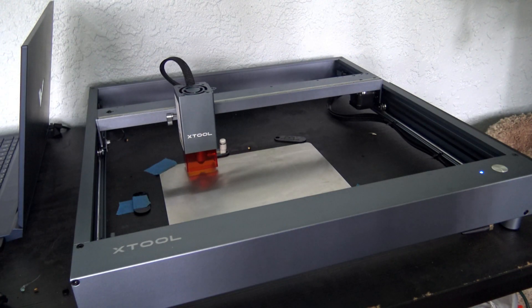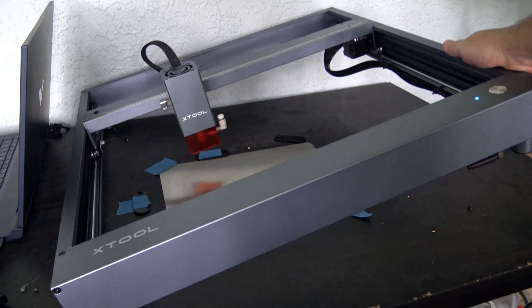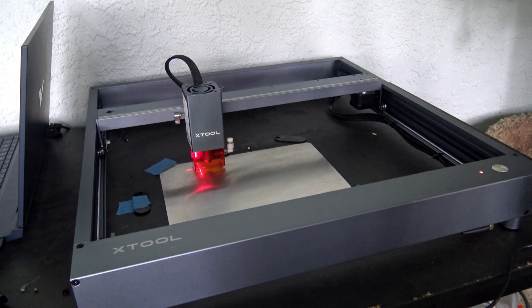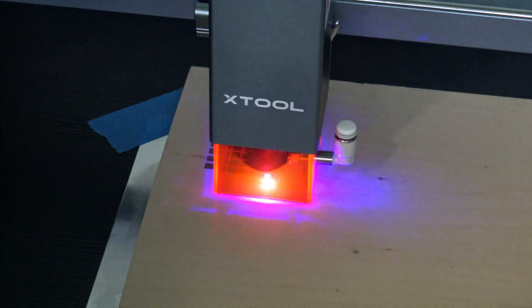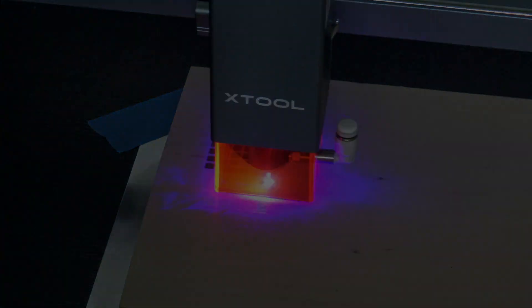Wrapping up the features, the D1 Pro has a built-in gyroscope which will stop the laser if it detects the frame has moved. Simply lifting the laser frame caused it to stop, although it took a second for it to kick in. It also has a flame detector which would stop the laser if it detects fire, but I couldn't test it as I couldn't get anything to ignite. Those are good safety features to see.